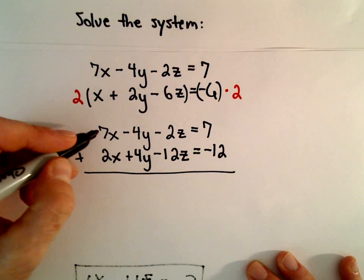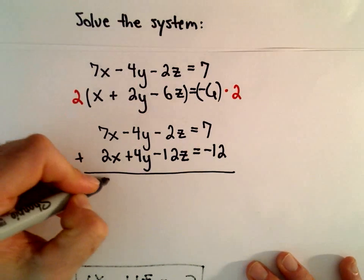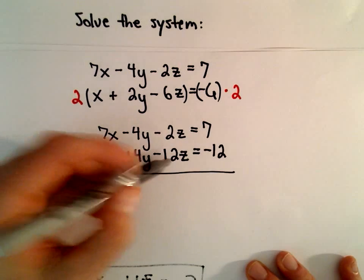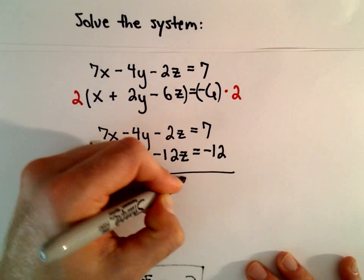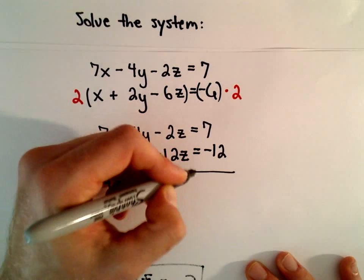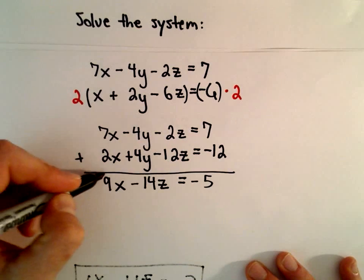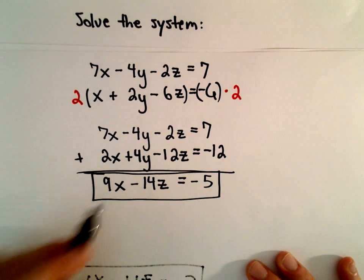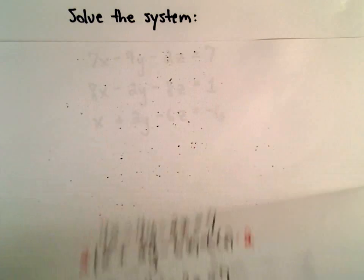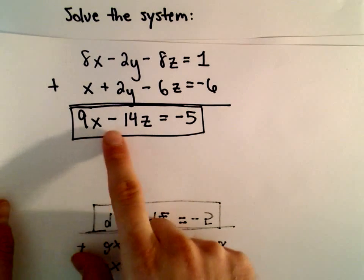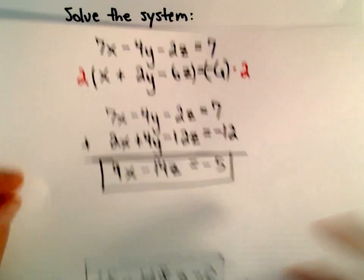Again, if we add those two equations, we've got 7x plus 2x, which is 9x, negative 2z plus negative 12z will be negative 14z, and then 7 minus 12 will be a negative 5. So we've created a new equation, but hey, actually it's the same equation we had a second ago. So 9x minus 14z equals negative 5.